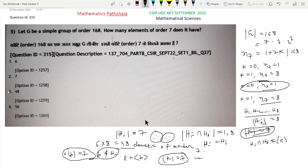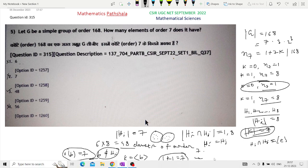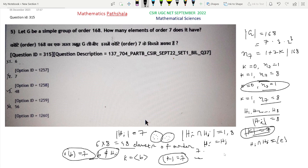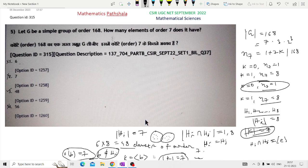So option 3 is the correct option, and options 1, 2, and 4 are not correct. In this way, we can find in this group how many subgroups of order p to the power r and how many elements of a given order. Using Sylow's third theorem, we can easily solve this type of problem. This is the solution. Thanks.